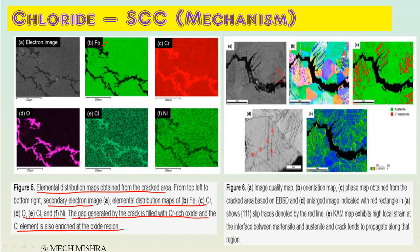This is another CLSCC image. Image (a) is the image quality map, (b) is the orientation map showing orientation of different grains, (c) is the phase map obtained from the cracked area, and (d) is an enlarged indication of the red rectangle showing slip traces bounded by the red line. The green areas are austenite and there is also formation of martensite in high local stress zones, which further causes CLSCC.